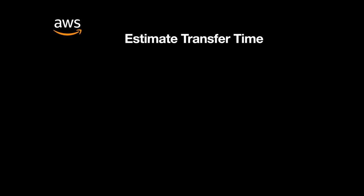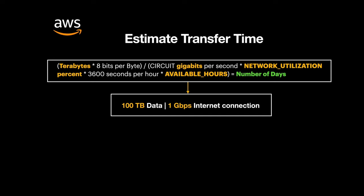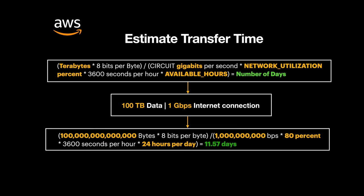AWS has given a mathematical formula to estimate how long your data transfer may take. It takes inputs of your data volume in terabytes, your available internet in gigabits, what percentage of your bandwidth you can allocate to data migration, and how many hours per day you can spare for migration, then outputs a number of days. For example, with 100 terabytes of data and 1 Gbps internet, considering you use only 80% of bandwidth and run the process 24 hours a day, it takes approximately 12 days to transfer 100 terabytes.